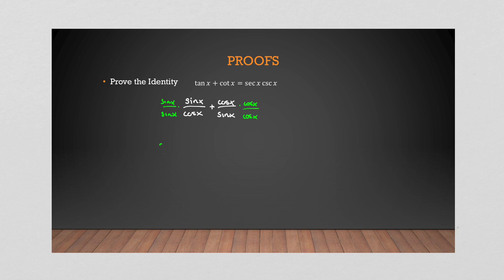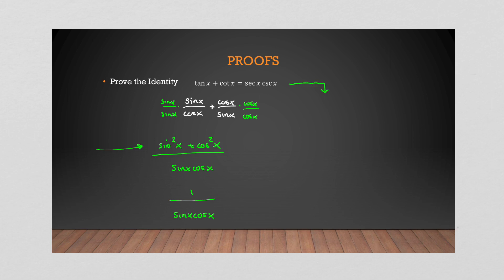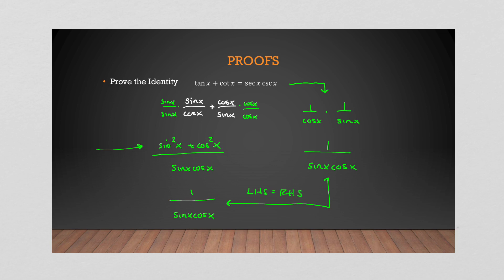The left-hand side becomes (sin²x + cos²x) / (sin x · cos x). Now I have everything over one denominator, and sin²x + cos²x is one of our Pythagorean identities — it equals 1. So the left-hand side simplifies to 1 / (sin x · cos x). On the right-hand side, sec x = 1/cos x and csc x = 1/sin x, giving 1 / (sin x · cos x). Left-hand side equals right-hand side — identity proved.